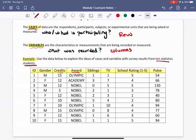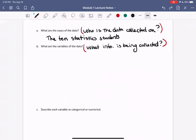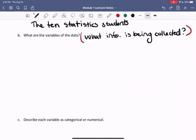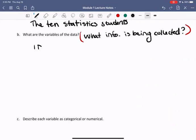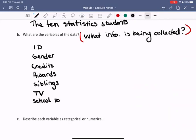So let's go ahead and write those down. And feel free to flip back into your previous page. But I have them here on a separate sheet, so I'll write them for us. So we are collecting ID. We are collecting gender. We are collecting credits. Number of credits, that is, we are collecting awards. We are collecting number of siblings. We are collecting number of TV hours watched. We are collecting their school rating. And we are collecting their pulse.